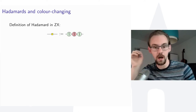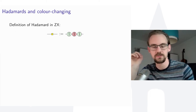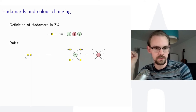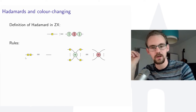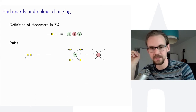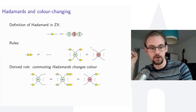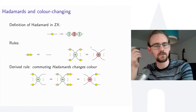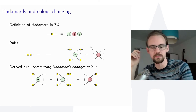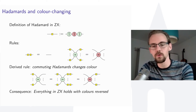There are also useful rewrite rules for the Hadamard. The Hadamard gate can be defined in terms of spiders via its Euler decomposition. Two key rules are: first, the Hadamard is self-inverse, so two Hadamards in a row cancel. Second, conjugating a spider with Hadamards on all inputs and outputs changes its color from Z to X. Equivalently, commuting a Hadamard through a spider brings it out the other end and changes the spider's color.